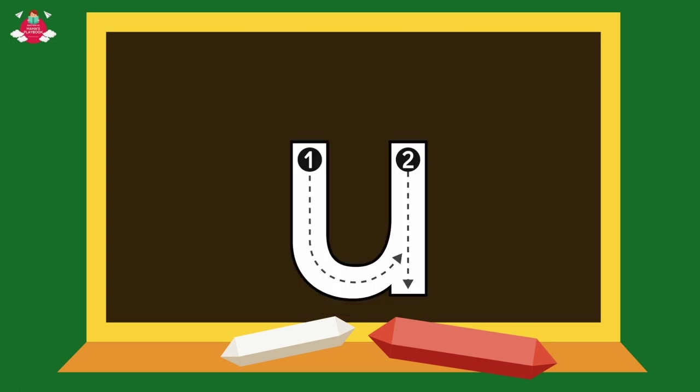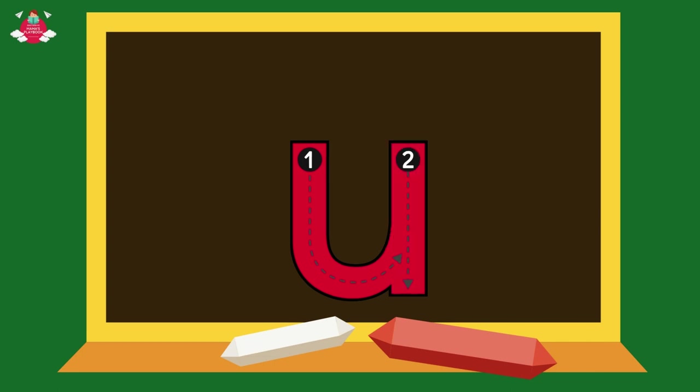Next, small U. Start from the middle and draw a standing line till the bottom, and then slightly curve upwards, again go to the middle, and draw another straight line downwards.